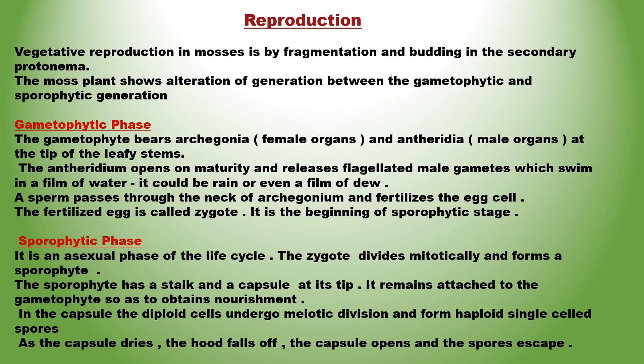As the capsule dries, the hood falls off, the capsule opens and the spores escape. These spores grow into a new gametophyte on reaching a suitable moist surface. Each spore produces thread-like structures called protonema. Vegetative reproduction of the secondary protonema occurs by budding and fragmentation. In sexual reproduction, the leafy shoots bear antheridia and archegonia at their apex.